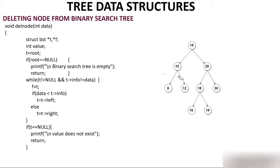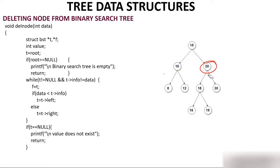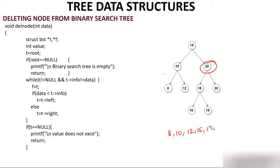The third condition is deleting a node having two children. Suppose I'm deleting node 20. The question is: who will take care of 20's two children, 18 and 30? I'll find the in-order successor. The in-order of BST is the increasing order of numbers: 8, 10, 12, 15, 16, 18, 19, 20, and 30.